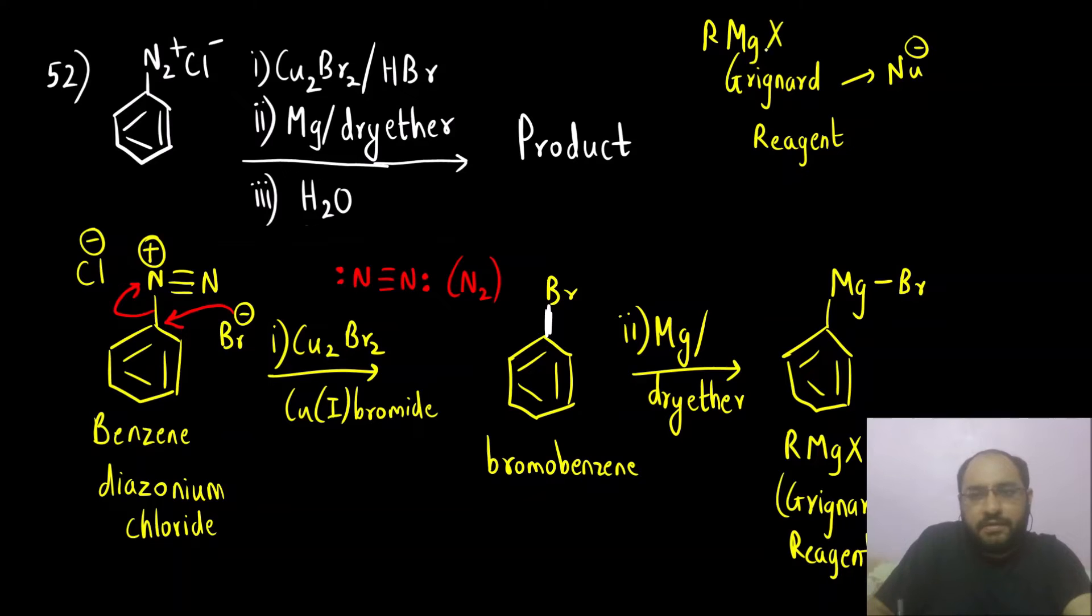We know in RMgX, magnesium is an electropositive atom. It has plus 2 charge. X is halogen is minus and R has a negative charge. That means here benzene has a negative charge like this. Ph minus, Ph means benzene ring. This can act as a nucleophile.